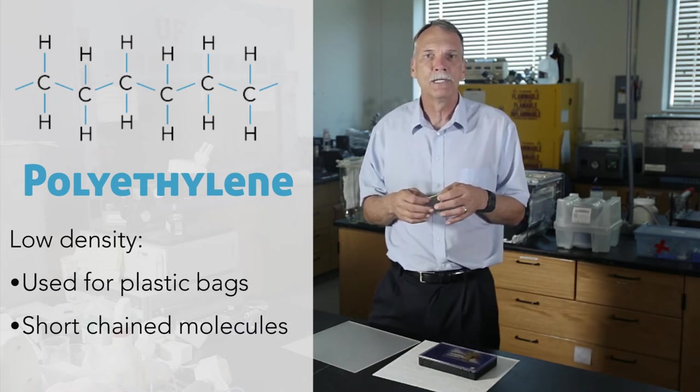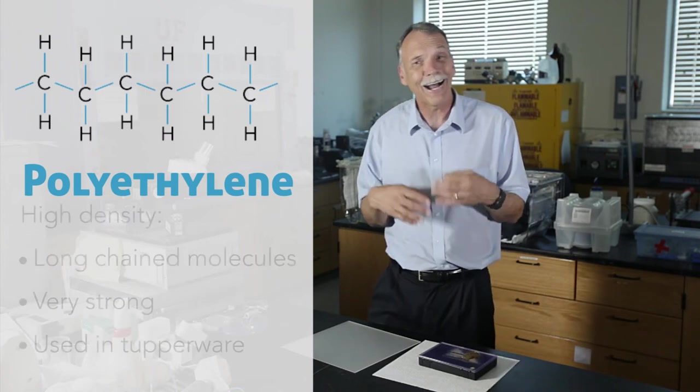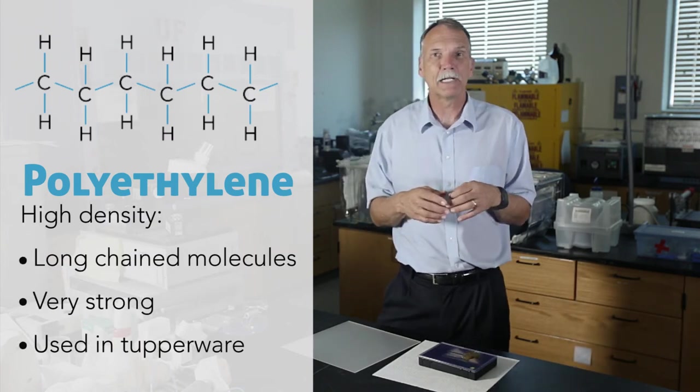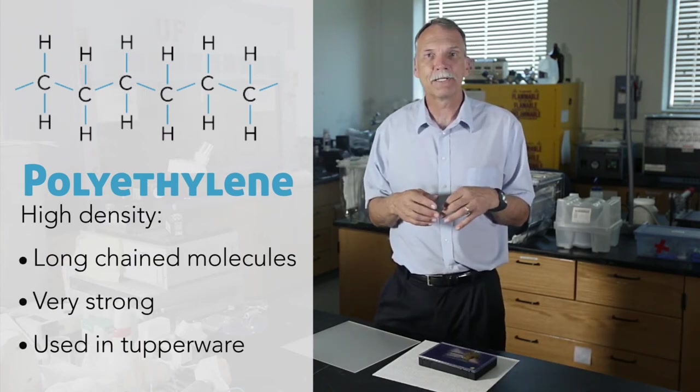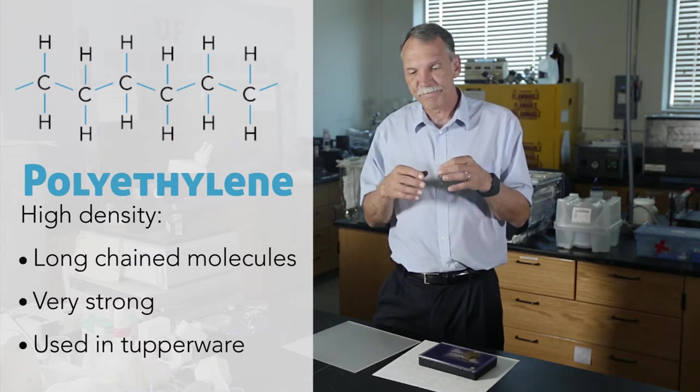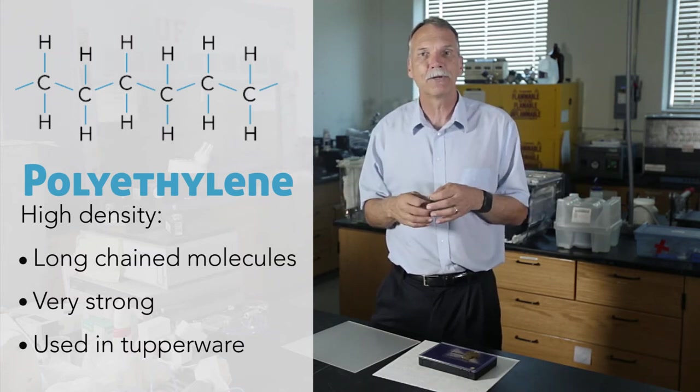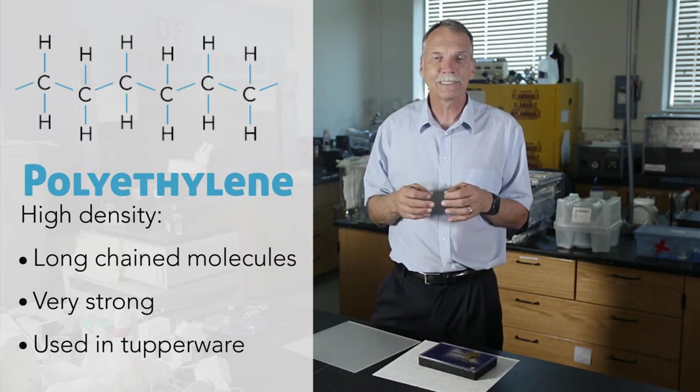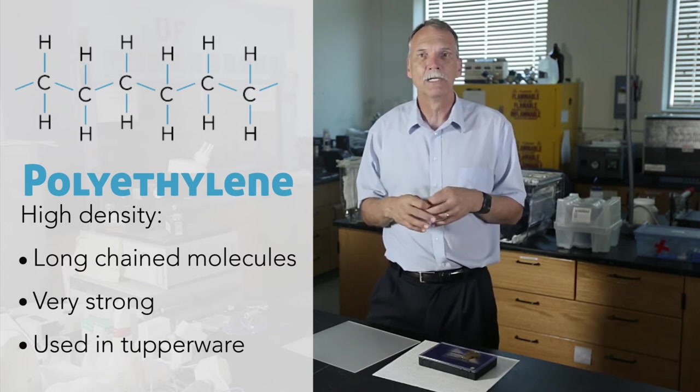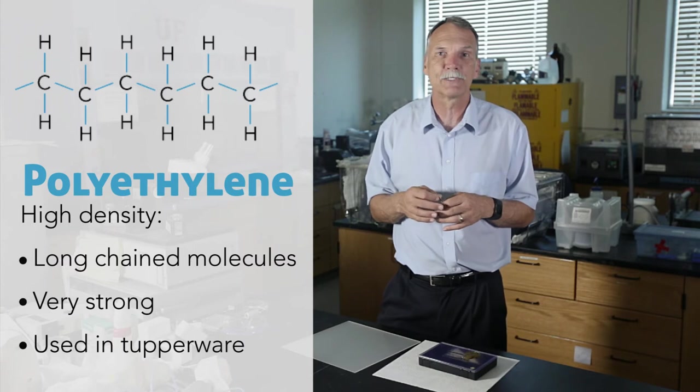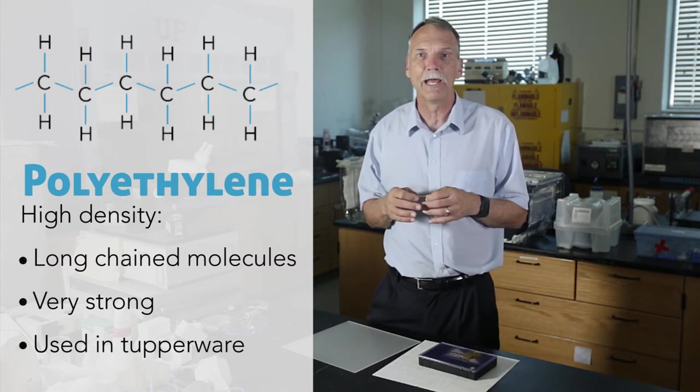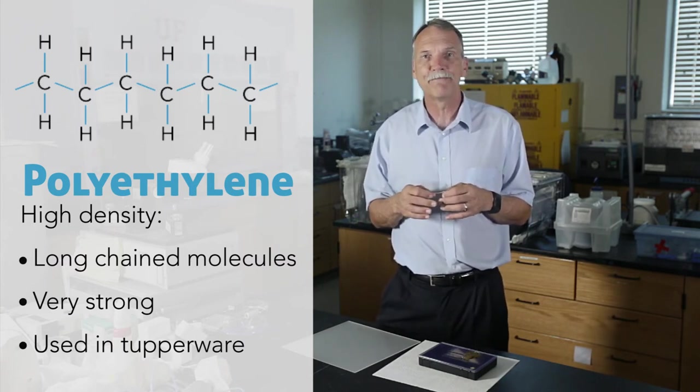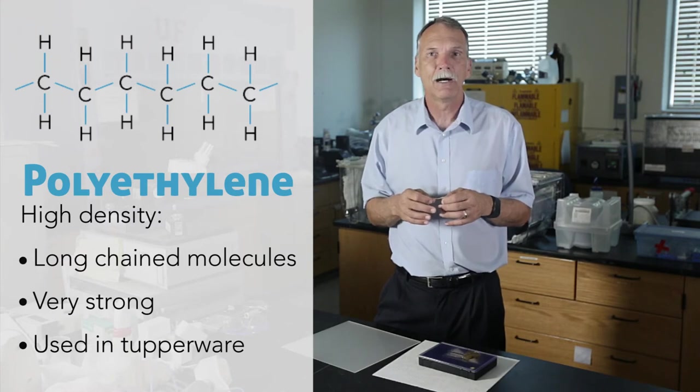High density polyethylene is a material that has very long chains that will crystallize and pack into a nice routine order, and because of that it becomes very very strong. High density polyethylene is used, for example, in a lot of your Tupperware today, and it also has a very large market share.